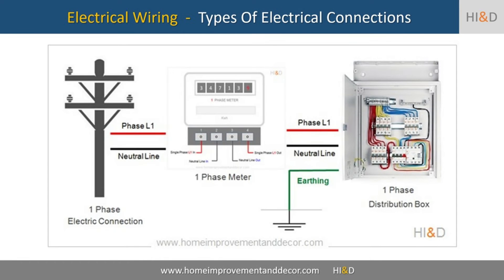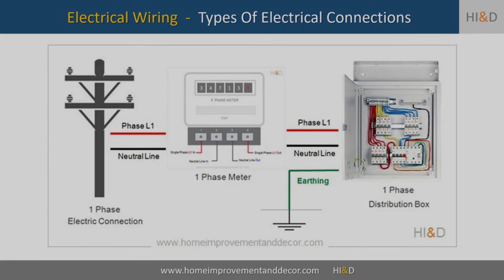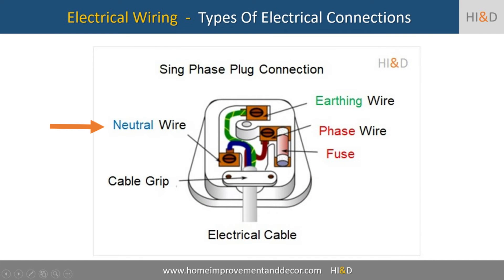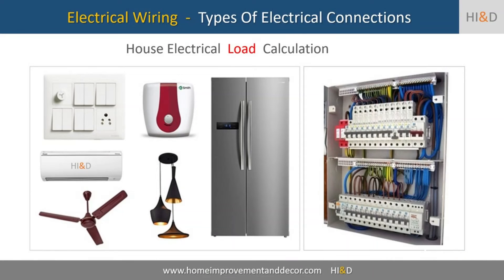Let us now understand the second type of wire called the neutral wire. It is the neutral wire that helps to complete the electrical circuit necessary for your gadget to power on. All electric home appliances need both the phase and neutral wire connection to work.